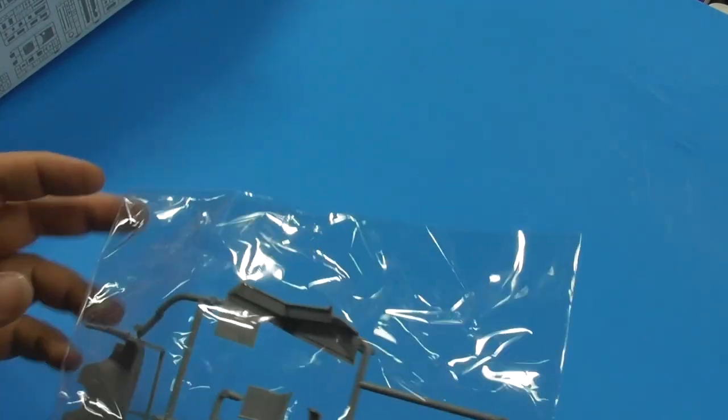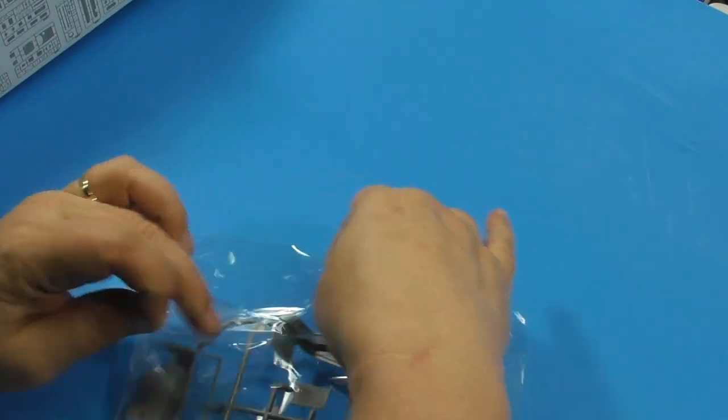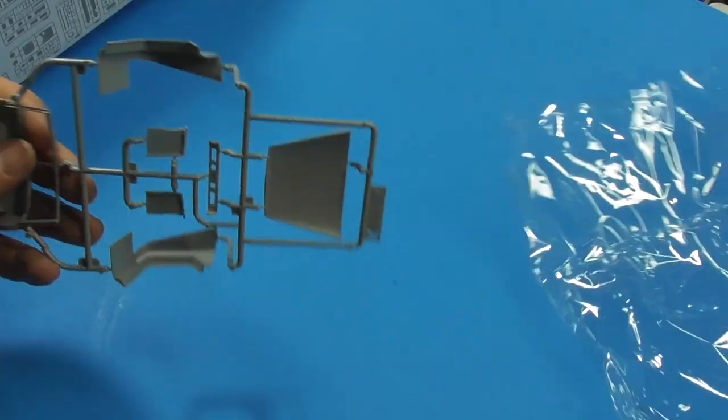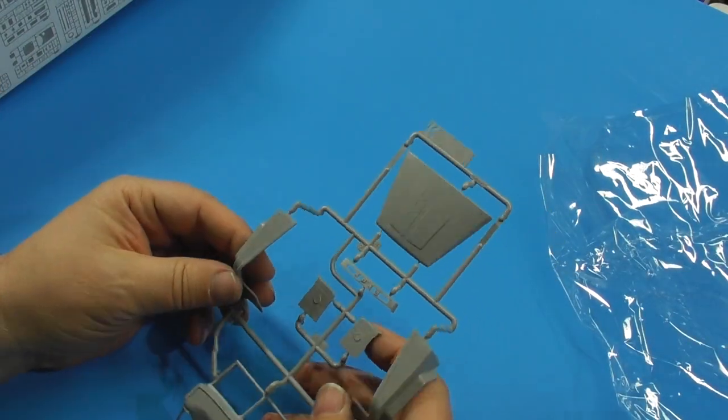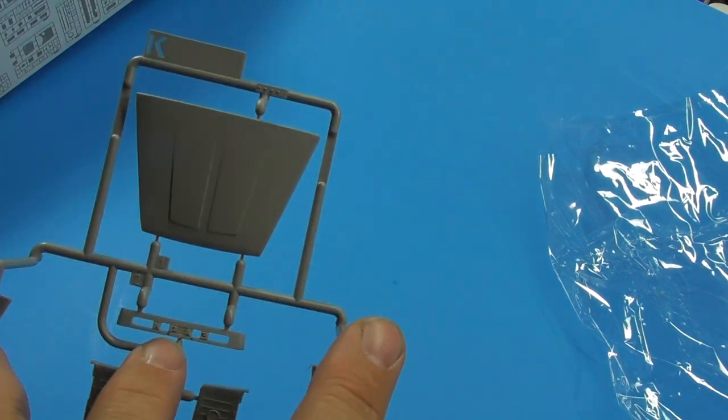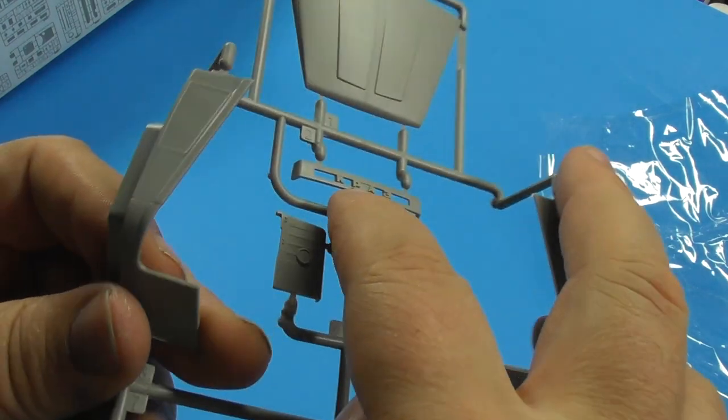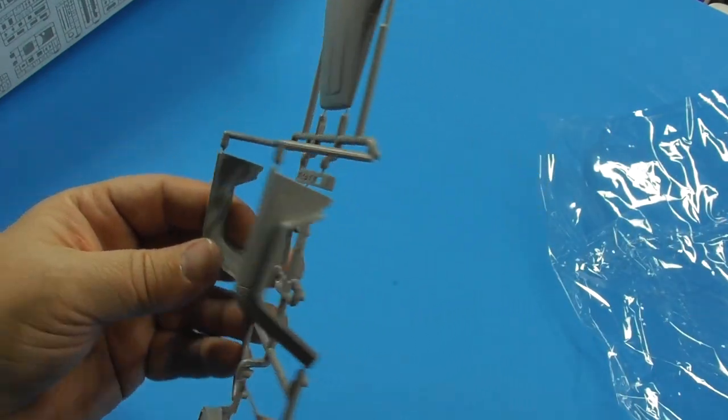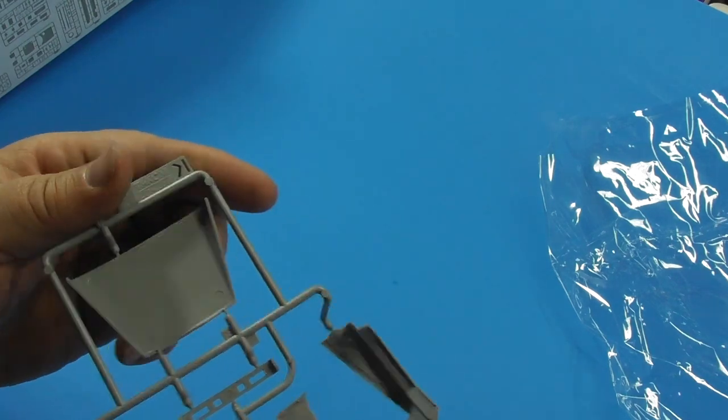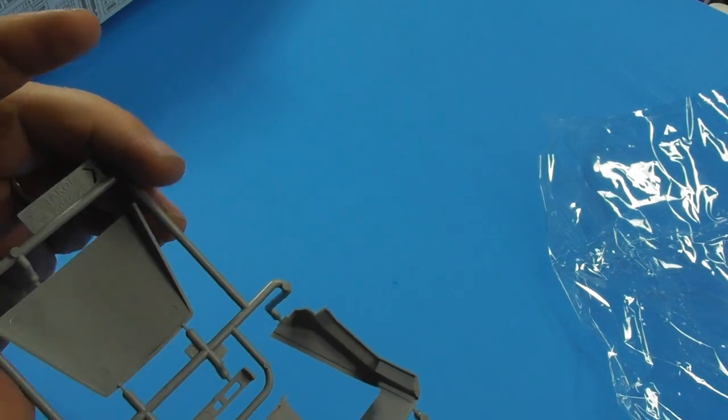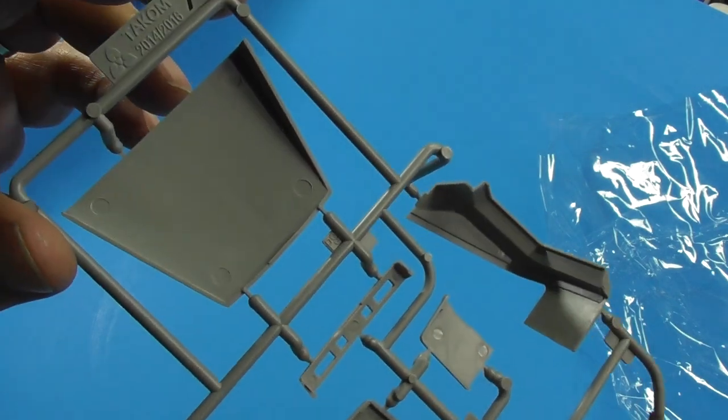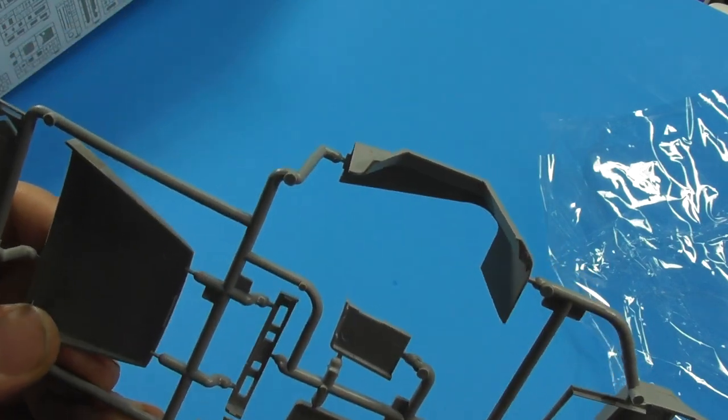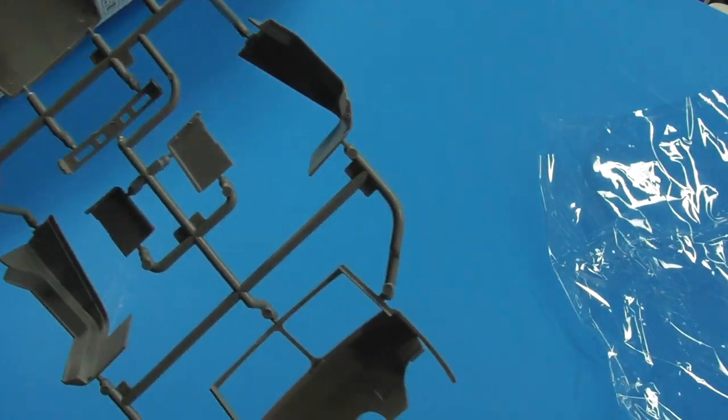This looks like fenders and a hood slash bonnet for the truck. You can see the nice beautiful Russian writing right there. Nice framework, fender detail, hood detail. There are ejector pin marks under the hood. I'm not sure if this has an engine but we'll find out. The ejector pin marks are all underneath. You might want to clear them up depending on how you're going to display the vehicle.